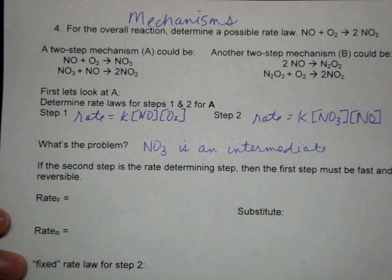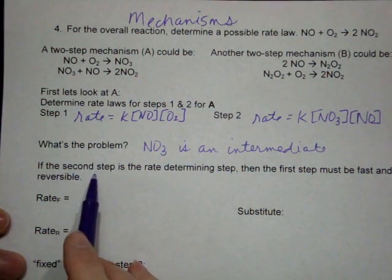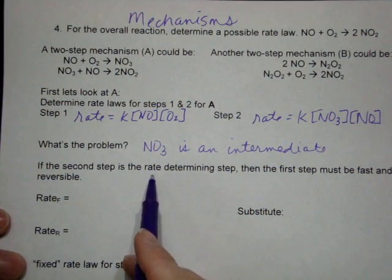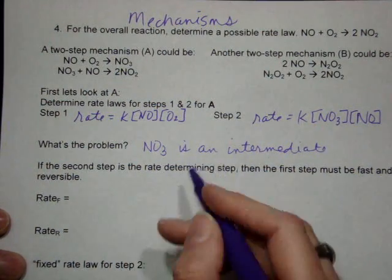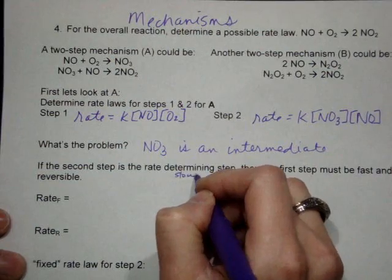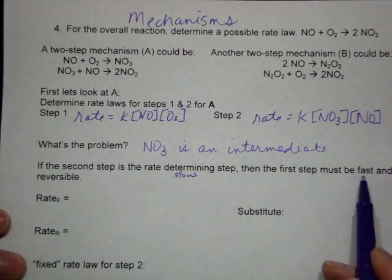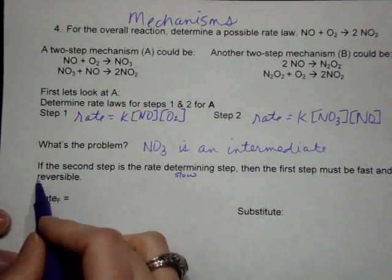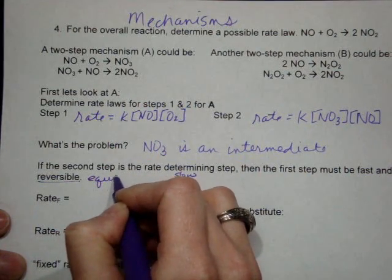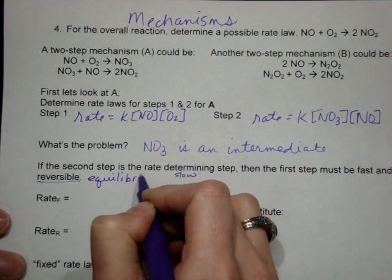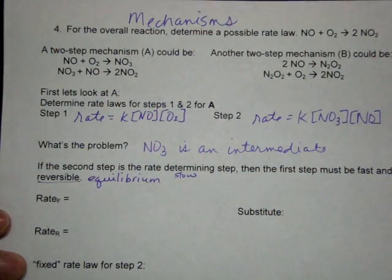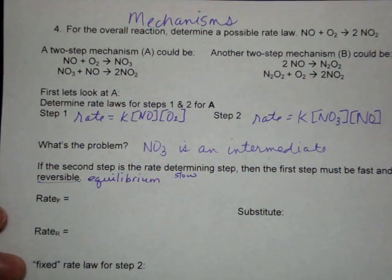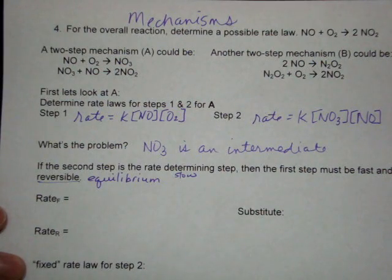So it really shouldn't be in our rate law if it doesn't show up in the reactants or the products. If we make a couple of assumptions, then we can deal with this. So if we assume that the second step is the rate determining step or the slow step, then the first step must be fast and reversible, which tells me that anything that comes before the slow step is at equilibrium. Again, meaning the forward rate has to be equal to the reverse rate.